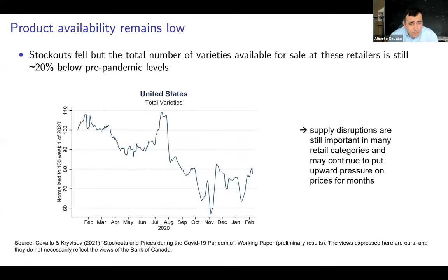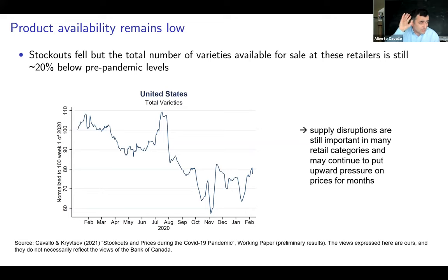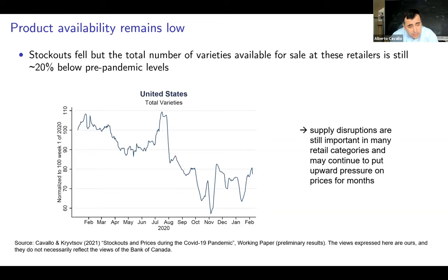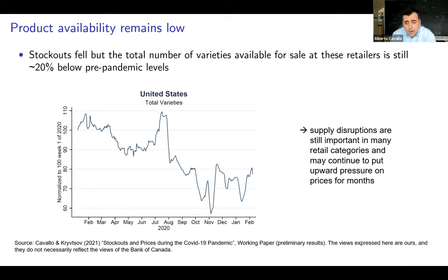Stockouts declined, but here's where the data gets tricky. It turns out that stockouts appear to have improved — when you go to these retailers, you don't find many goods labeled as out of stock. But what happened is that many companies removed completely some varieties. We've seen a decline in the total amount of goods actually offered for sale. I've normalized the number of goods we find on websites at the beginning of the pandemic, and today we're roughly about 20% below in total product availability. I believe this is an indication that supply disruptions are still quite important for many of these companies, and this will continue to put some upward pressure on prices for some months.